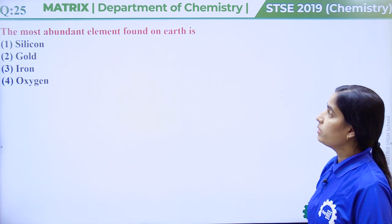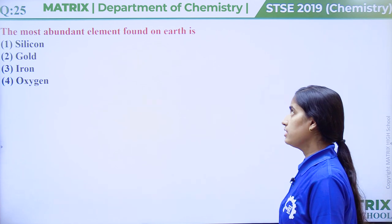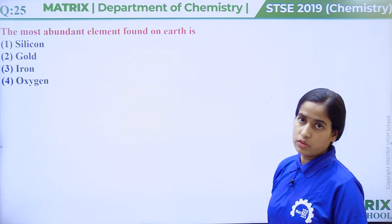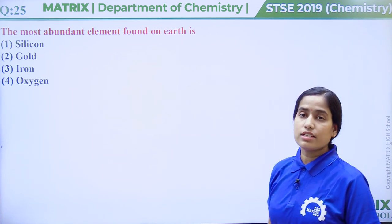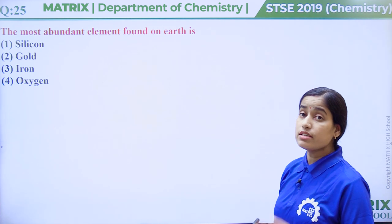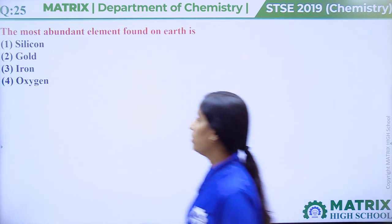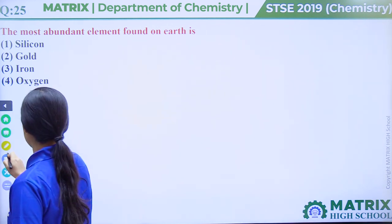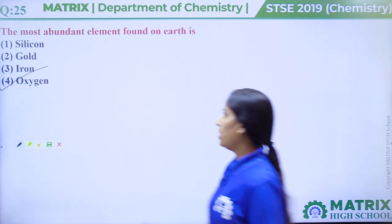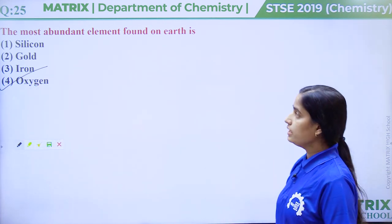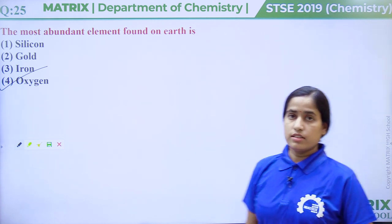Question number 25: The most abundant element found on earth is — silicon? No. Gold? No. Iron? No. Oxygen? Yes. Oxygen is the most abundant element found on earth. So the correct answer is option number 4, oxygen. Thank you students.